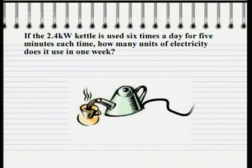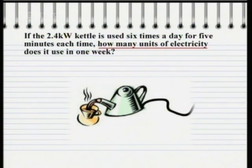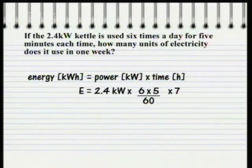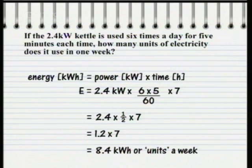Here's another question about the kettle. If the 2.4-kilowatt kettle is used six times a day for five minutes each time, how many units of electricity does it use in one week? Units of electricity are the same as kilowatt hours, so we use the energy formula: E equals 2.4 kilowatts times six times a day times five minutes divided by 60 to give time in hours, times seven days in a week. That simplifies to 2.4 times one-half times seven, which equals 8.4 kilowatt hours, or 8.4 units of electricity.